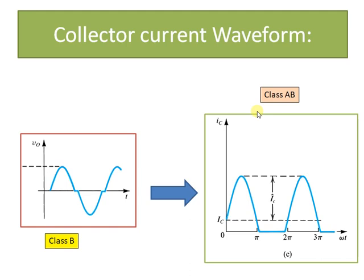When VI or the input voltage is less than the cut-in voltage, the output current will be equal to zero. We had seen that there was a dead band present in the case of class B amplifiers. So the output waveform obtained was not an exact replica of the input but was distorted, and that distortion was referred to as crossover distortion.